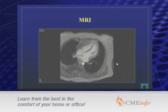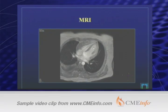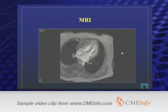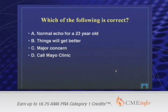Since multimodality imaging is available, notice that there's something near the RV, and notice the abnormal septal motion — abnormal septal bounce. So which of the following is correct: Is this a normal echo for a 23-year-old? Things will get better? Is there major concern? Or call Mayo Clinic?